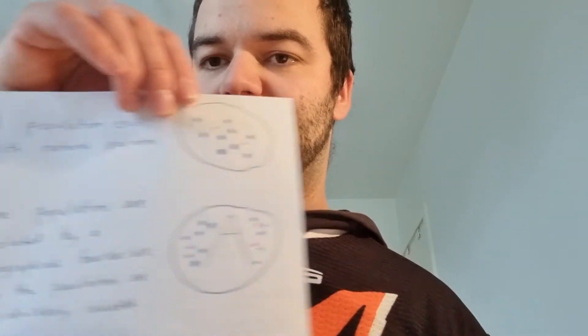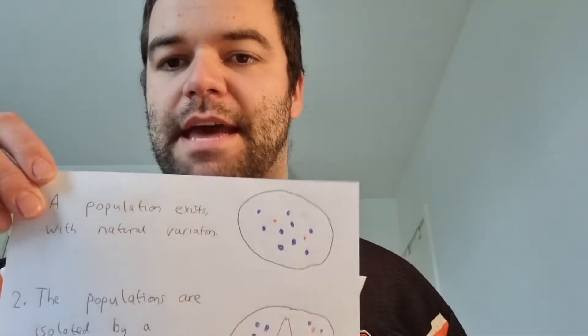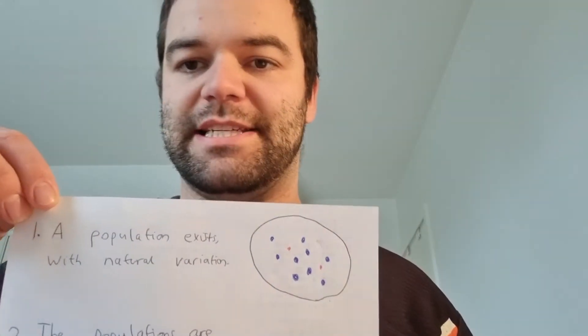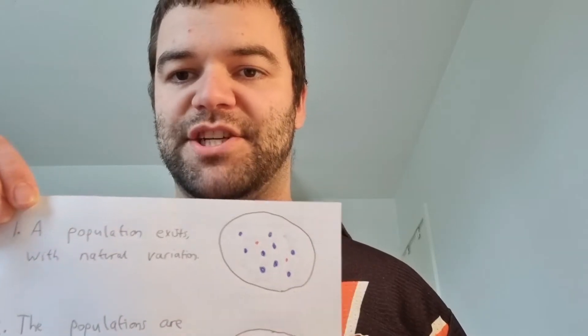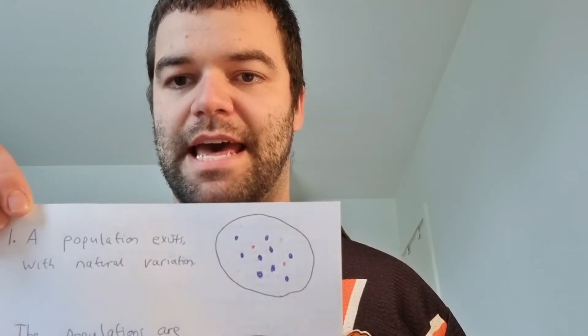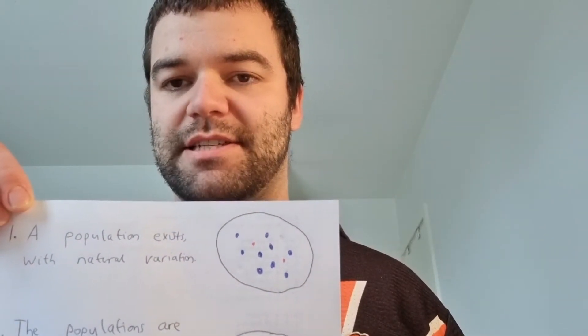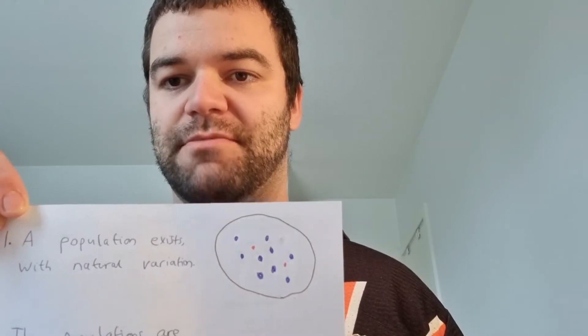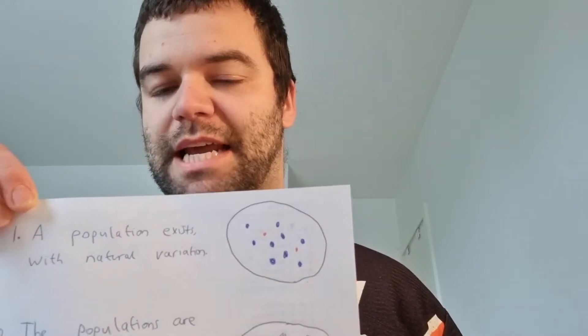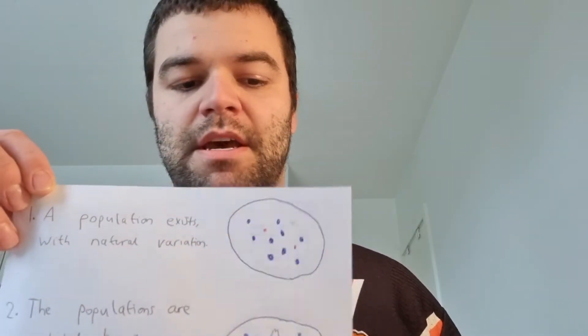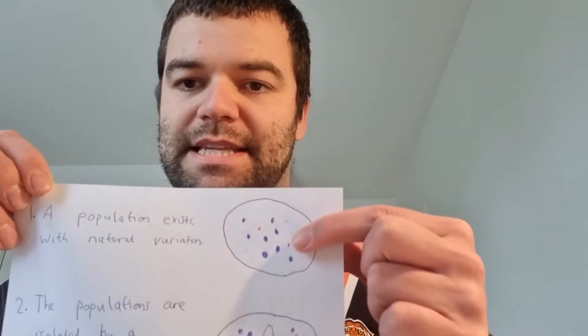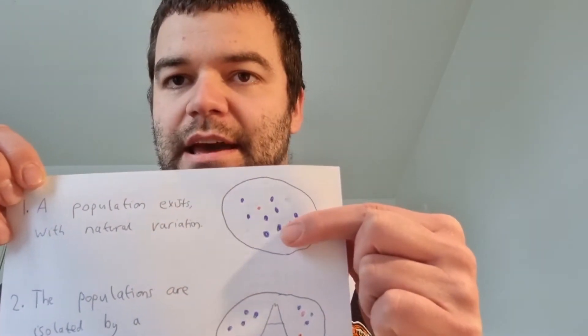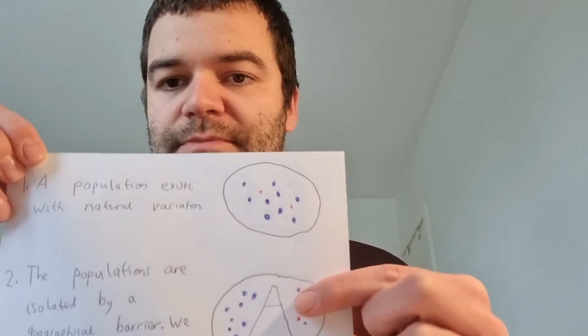What I want you to imagine in these diagrams is that this represents a population. As you can see, there is naturally existing variation in the population. I've represented that with blue dots and red dots to indicate variation within this population of whatever animal it is. Right now, they all live in the same area and can easily interbreed.